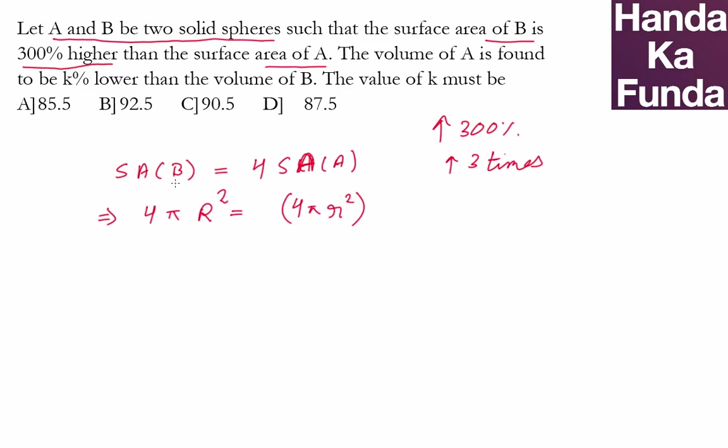Now, we know that surface area of B is four times surface area of A. So what relationship does this give us? 4π cancels with 4π. We are left with R² = 4r², which gives me R = 2r.